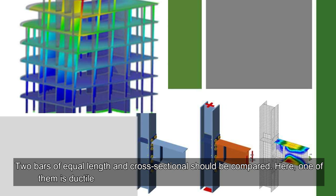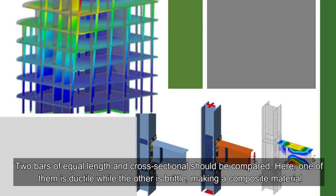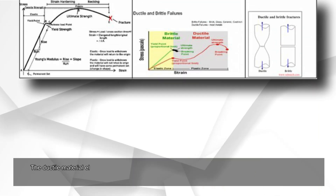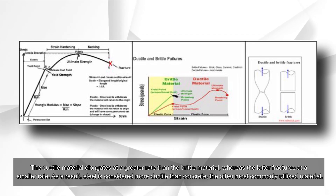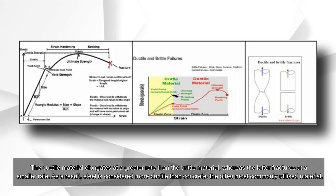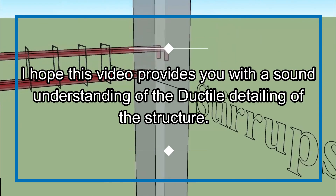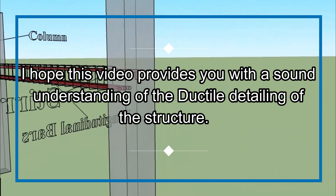To compare, consider two bars of equal length and cross-section — one ductile and one brittle, forming a composite material. The ductile material elongates at a greater rate than the brittle material, whereas the brittle material fractures at a smaller rate. As a result, steel is considered more ductile than concrete, the other most commonly utilized material.